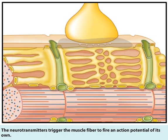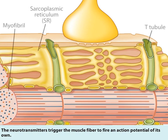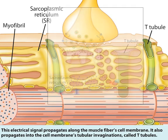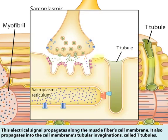The neurotransmitters trigger the muscle fiber to fire an action potential of its own. This electrical signal propagates along the muscle fiber's cell membrane, and also into the cell membrane's tubular invaginations called T-tubules.